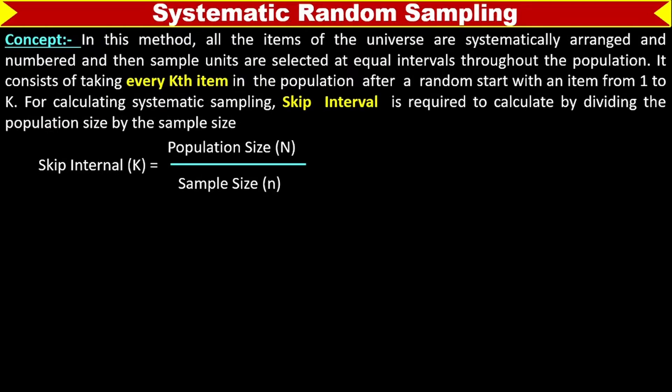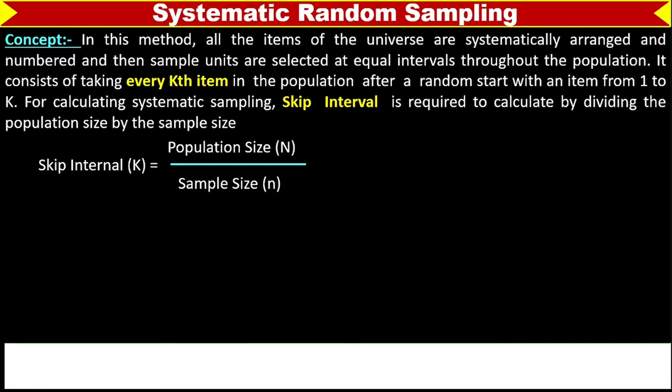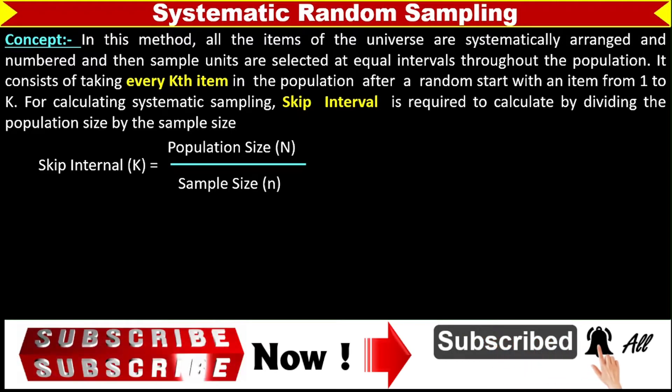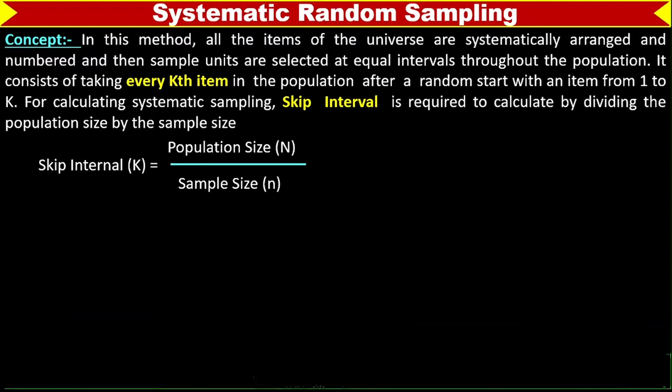Systematic Random Sampling. In this method, all the units of the universe are systematically arranged and numbered, and then sample units are selected at equal intervals throughout the population. It consists of taking every kth item in the population after a random start with an item from 1 to k.